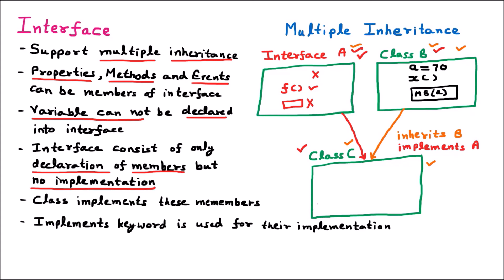Who is going to implement the methods of the interface? It will be the class. Function F in the interface has only a name but no implementation. So in class C we redefine F and provide its implementation. This implementation is provided by the child class of the interface. The class accesses the interface using the `implements` keyword.